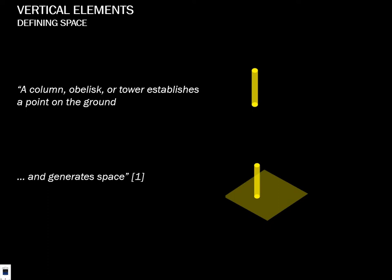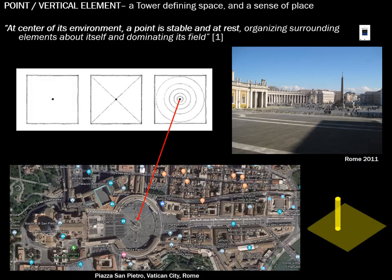Talking now about vertical elements — columns, obelisks, towers. They generate a space around them by virtue of rising out of the ground plane. This is Rome — a picture I took in 2011 — showing how a tower defines a space around it. This is St. Peter's Basilica, where the pope gives services. Vatican City is a separate place within Italy, with the Swiss Guard. A space is certainly generated around this obelisk in the piazza.